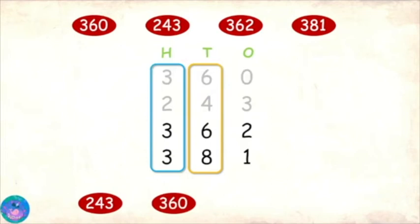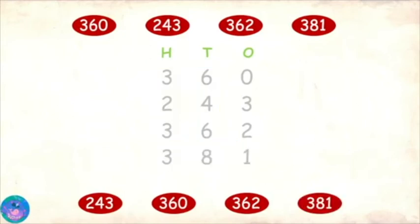And now we are left with two numbers. Both have 3 in hundreds place. So we compare their tens. And 6 is smaller than 8. So 362 is the next smallest number. And we are left with only one: 381. And that comes last.